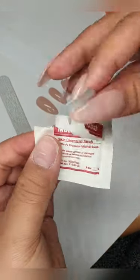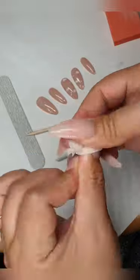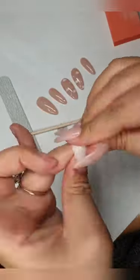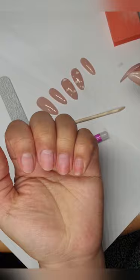Once that's done, use the alcohol swab in your kit to wipe your natural nail to get rid of the natural oils and any excess nail dust.